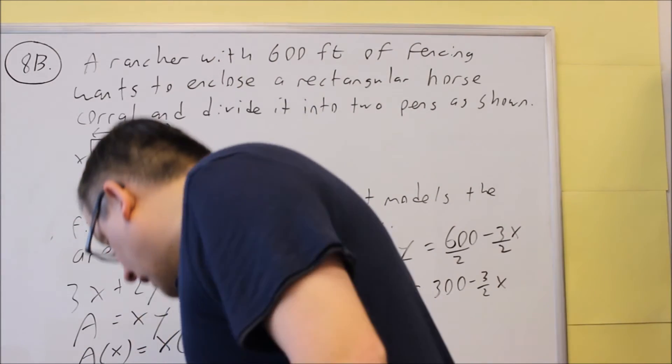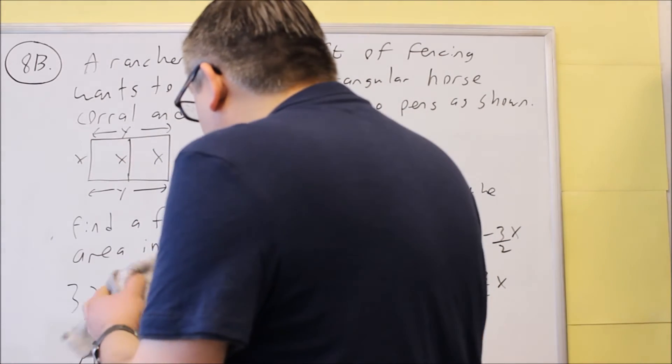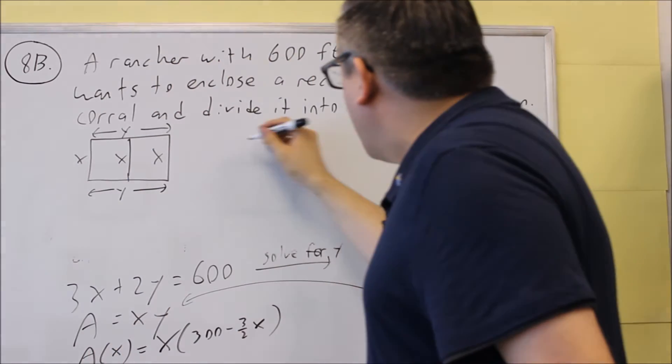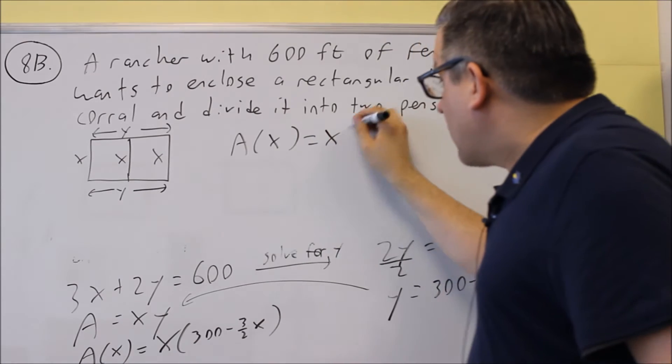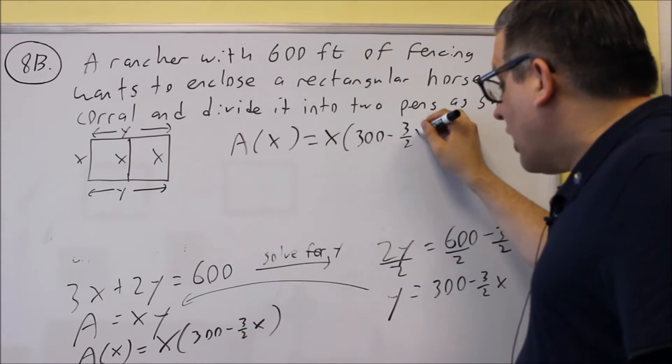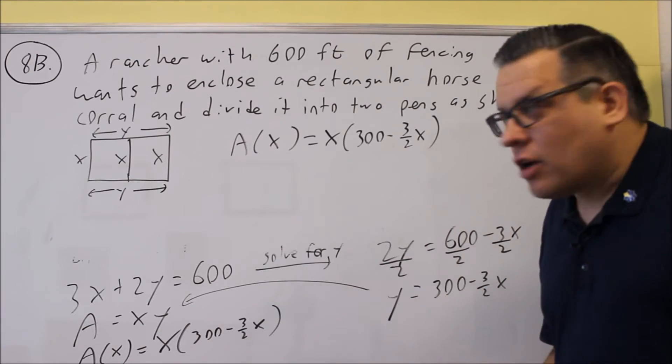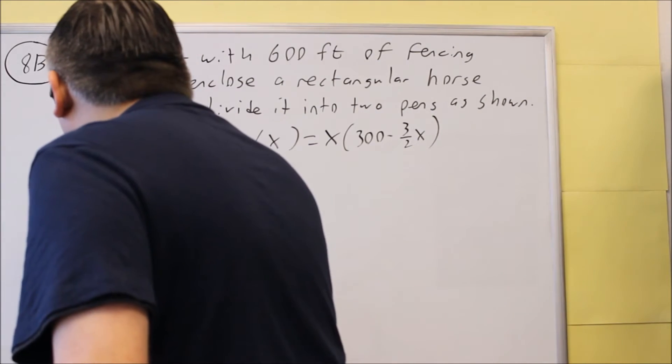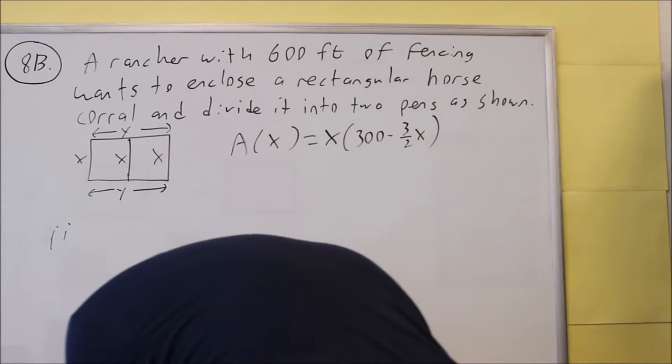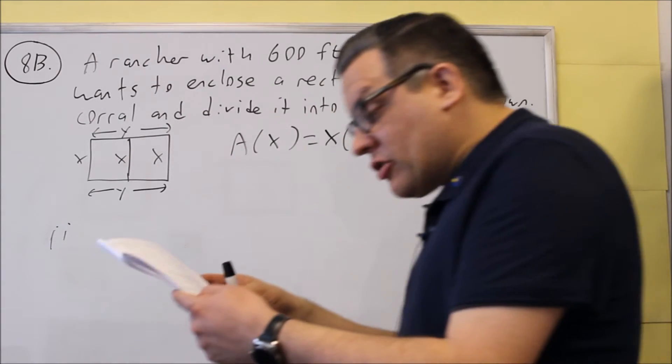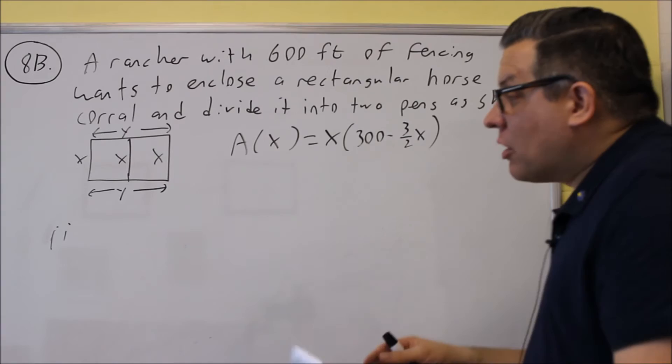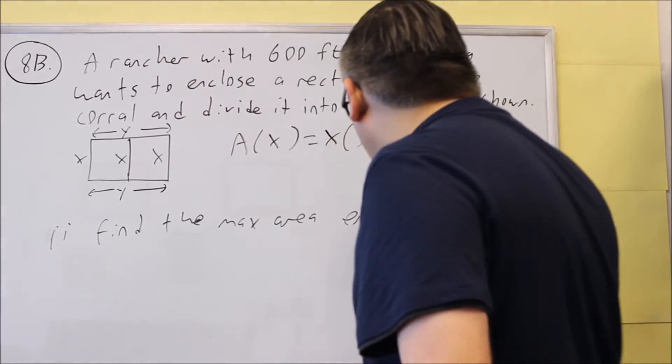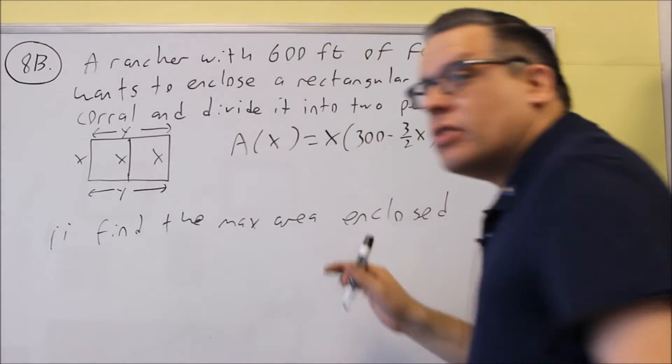Now let's do part ii here. So for this one, we're going to keep that same formula. A of x is equal to x times 300 minus 3 halves x. So I'm going to keep that one because we need to use that in order to do the second part. The second part is asking you to find the maximum area that can be enclosed.